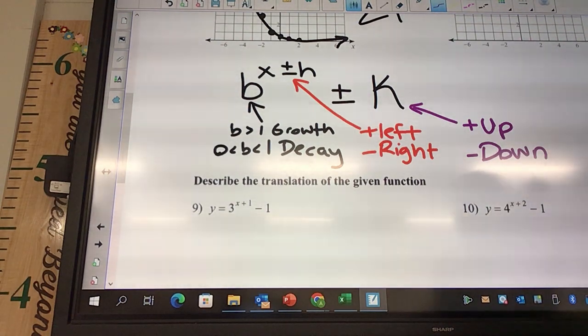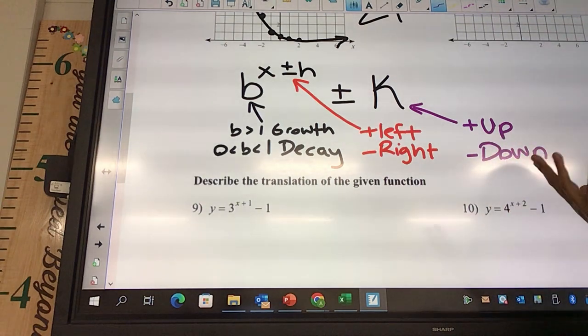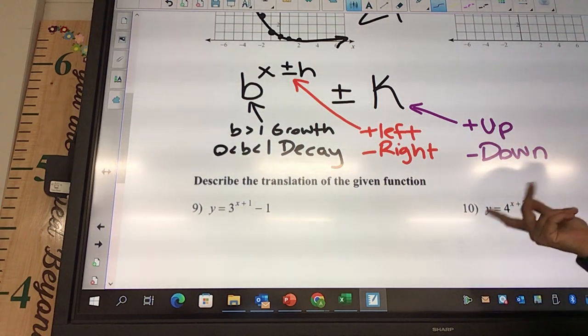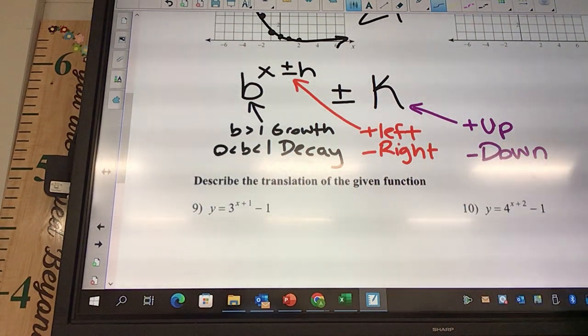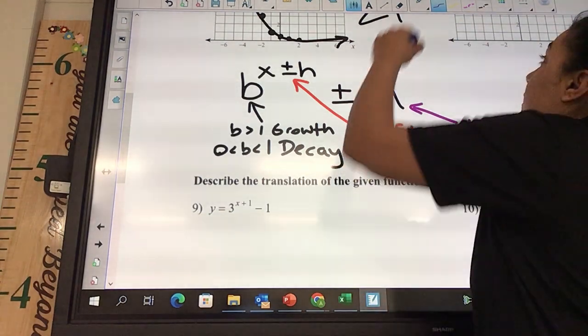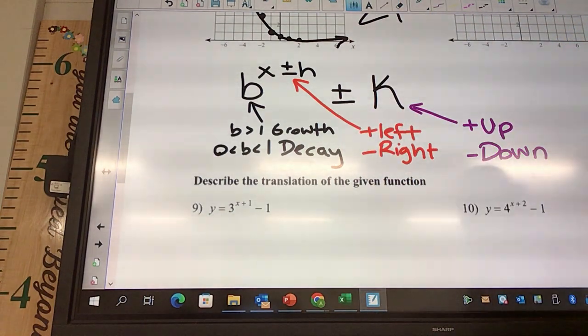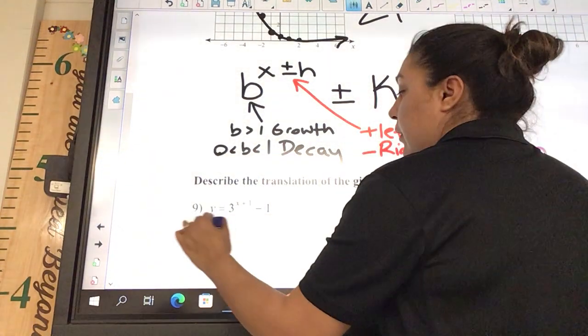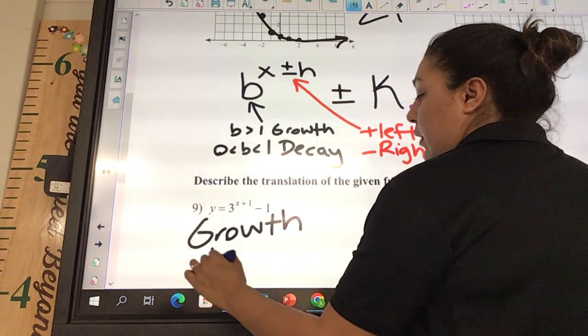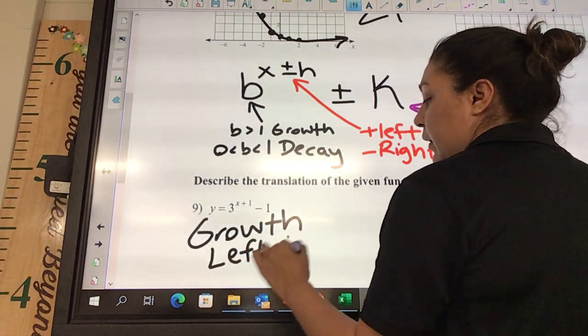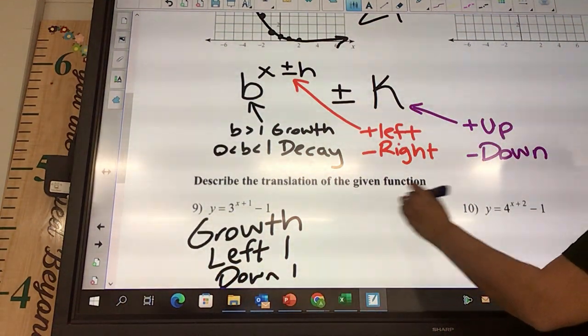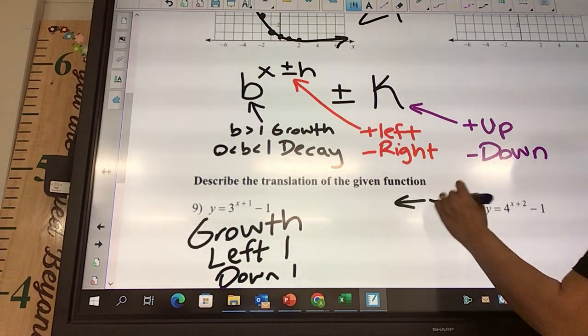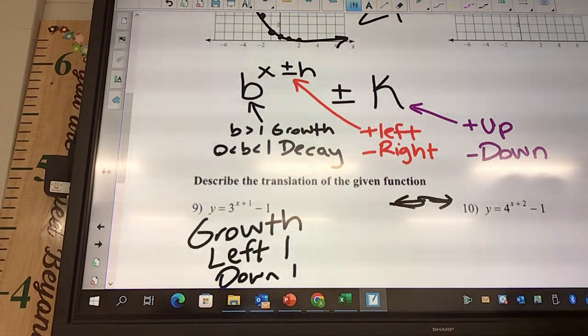So if we look at these, and those are the three things. So all these problems are going to be three points. Did you put growth or decay? Did you say left or right? Did you say up or down? So if we look at 9, is that growth or decay? That is growth. Left 1, down 1. Some of you guys, and I don't mind on the worksheets doing this, you're saying left or right. Write the word out on your quiz so there's no confusion there.